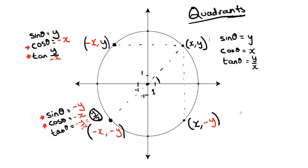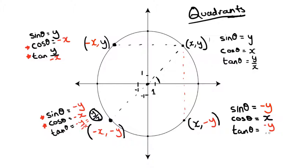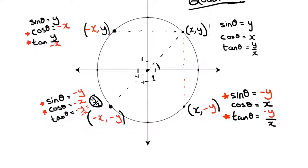Two of the three functions are negative in quadrant three, while tangent is positive because negative divided by negative is positive. Over in quadrant four, sine of theta is negative y, cosine of theta is just x because x is positive, and tangent of theta is negative y over x. Again two of the three functions are negative.